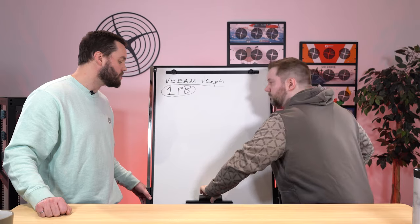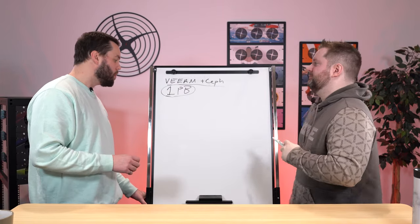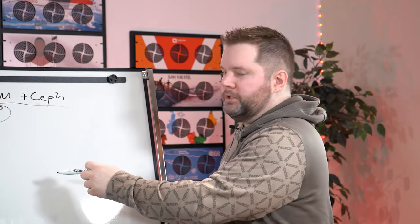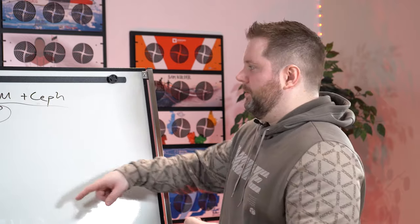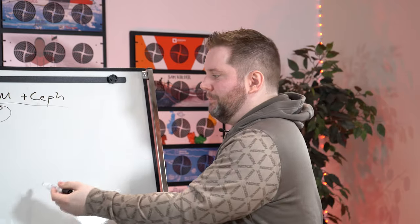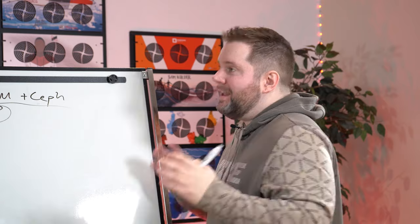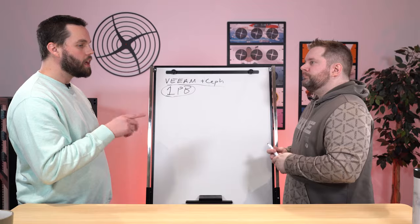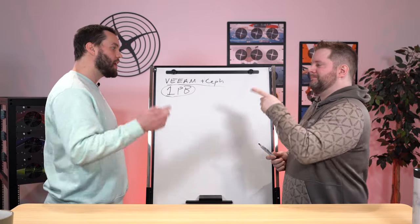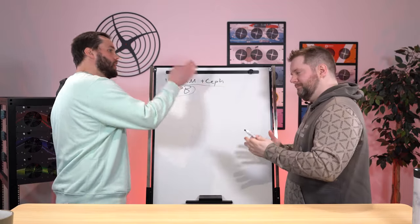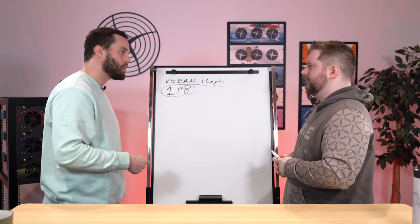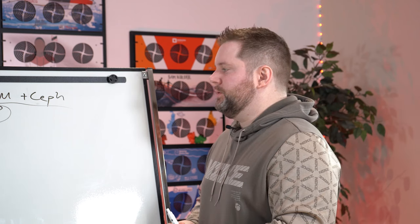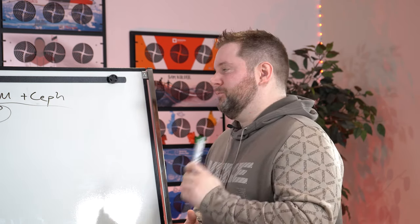That's one way we've done it for a long time — it's rock solid and supported. But if you've got that RBD mounted on one machine and that machine goes down, your Veeam repository is down until you get it back up or move the RBD. Your data is not lost because it's backed by a highly available Ceph cluster, but you still need a redundant gateway acting as a proxy.